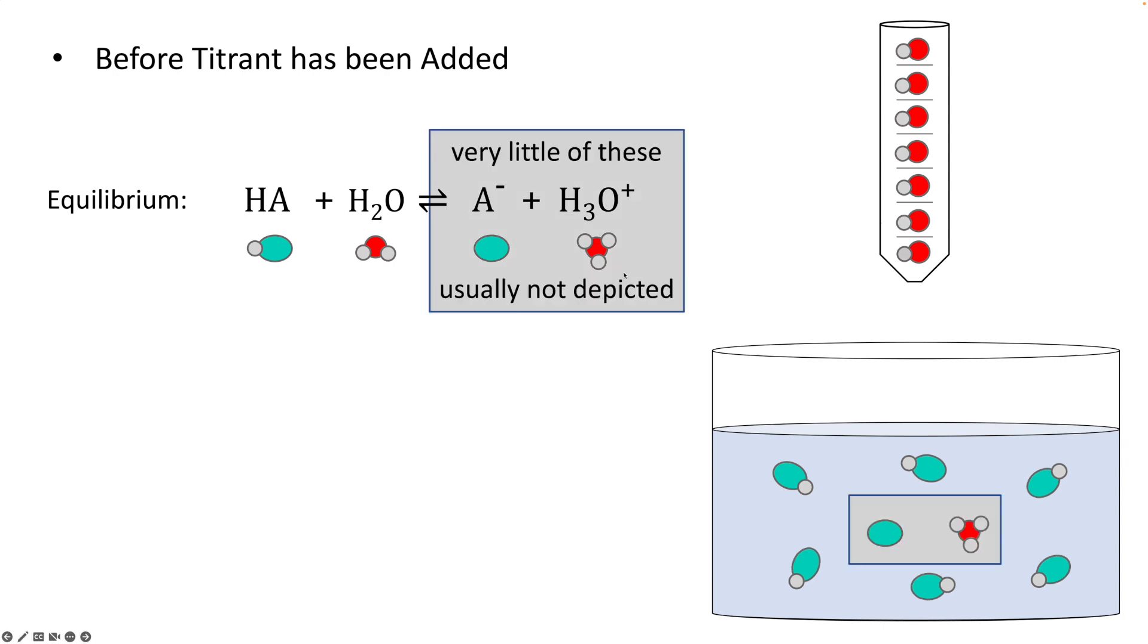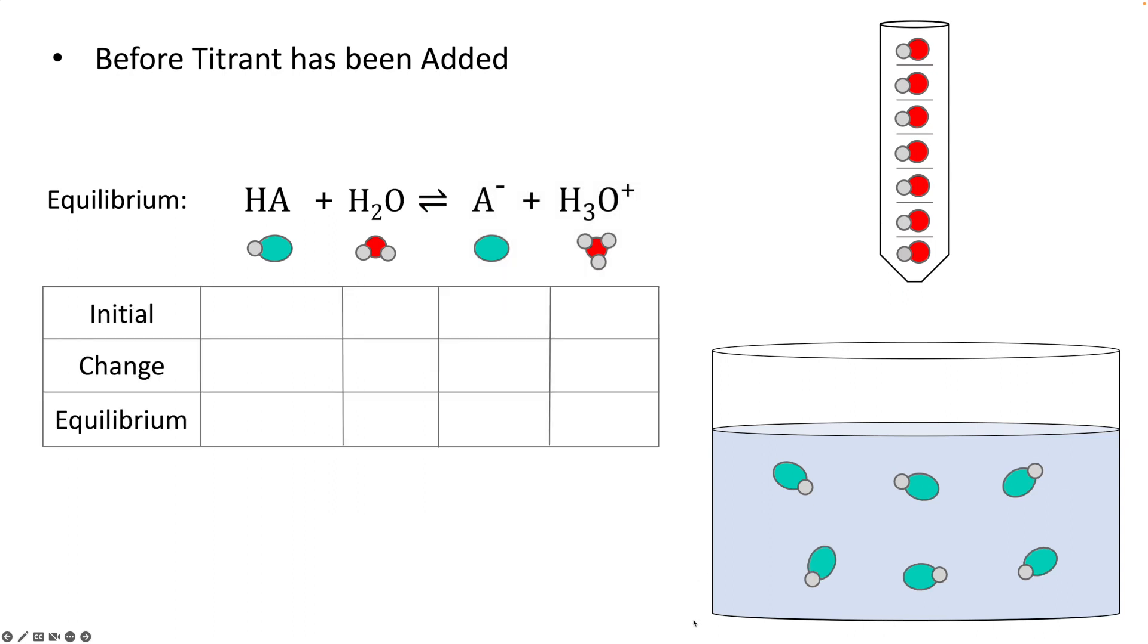So very little of this happens, but there's a few. So out of maybe a hundred molecules of HA, one of them or so will dissociate into A minus the conjugate base and the hydronium ion. And in general, we're not showing those, but there's a little bit of it there.